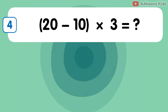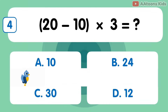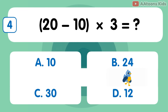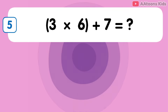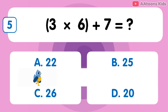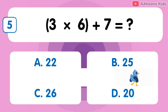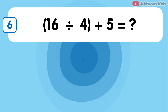20 minus 10 multiplied by 3 is 25. 16 divided by 4 plus 5 is 9.